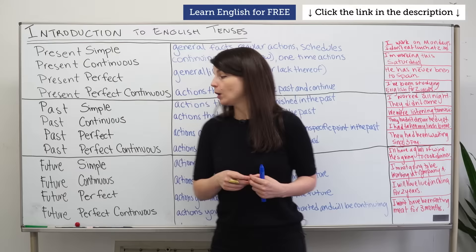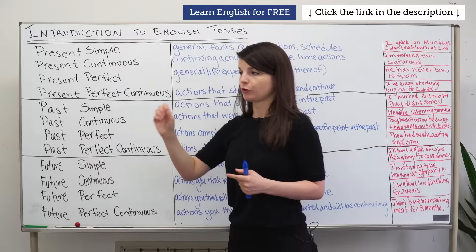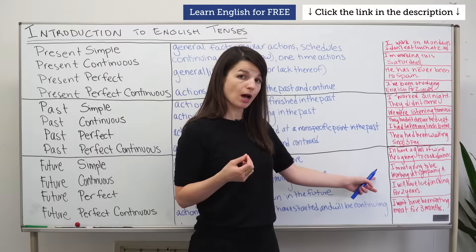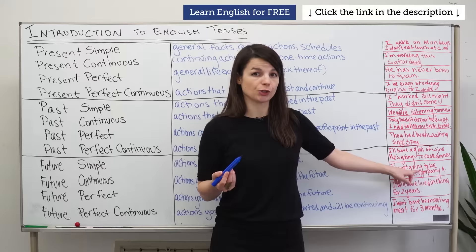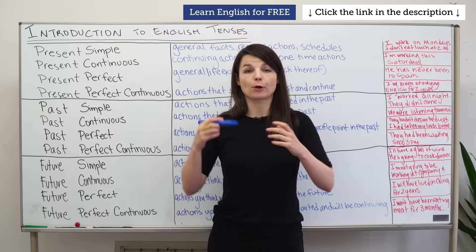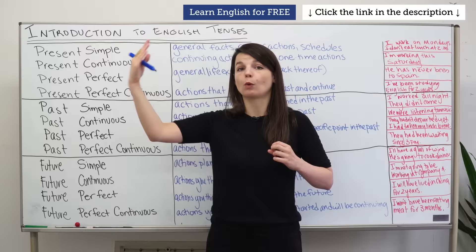Future continuous tense is for actions you think will or will not be continuing in the future — something you think will be continuously happening. Example: 'I'm not going to be working at company A.' This means I won't have a job or continue my position at company A in the future. That's my thought now in the present about that future time.